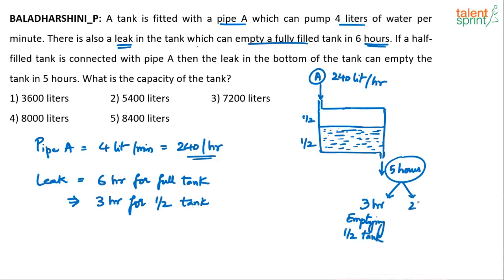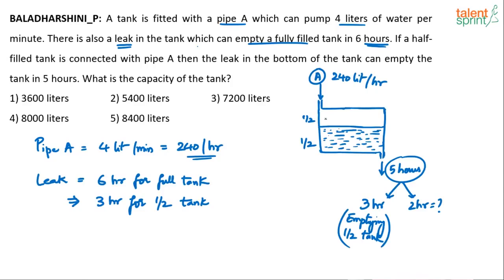What did the leakage do in the remaining 2 hours? Out of 5 hours, 3 hours were spent emptying half of the tank. In the remaining 2 hours, the leakage was emptying the water which was filled by pipe A. How much water did pipe A fill? It filled 240 liters per hour.